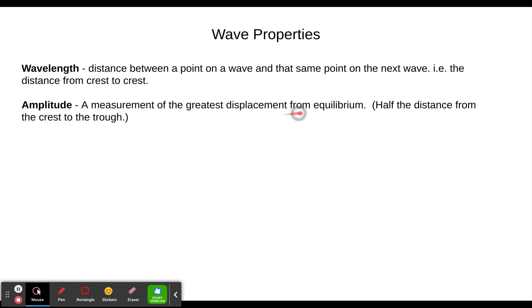Amplitude is a measurement of the greatest displacement from equilibrium. In other words, it's half the distance from the crest to the trough, which is the wave height — so equilibrium to greatest displacement.